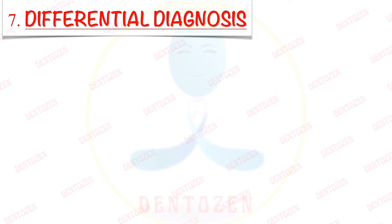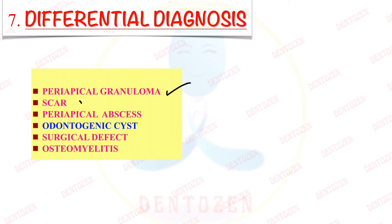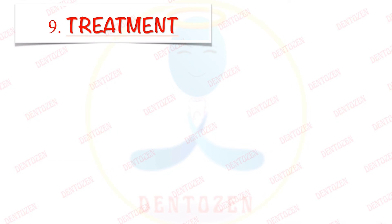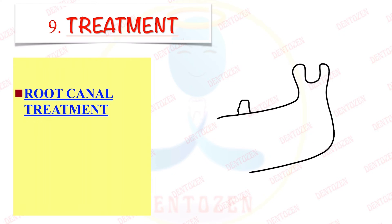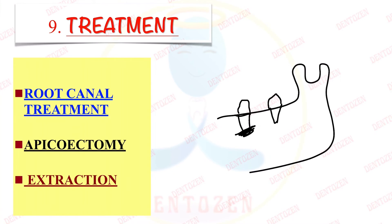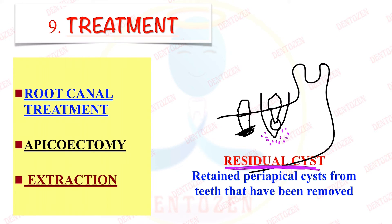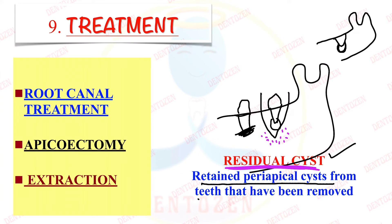For differential diagnosis, lesions that can look similar to periapical cyst or radicular cyst include periapical granuloma, periapical scar, periapical abscess, other odontogenic cysts arising in this location, surgical defects, and osteomyelitis. For treatment, we can do root canal treatment of the tooth, followed by apicoectomy — cutting the apex of the root and doing a filling — or we can do extraction of the tooth, removing it completely along with the cyst. Remaining epithelial fragments can develop into a residual cyst — a retained periapical cyst from teeth that have been removed.